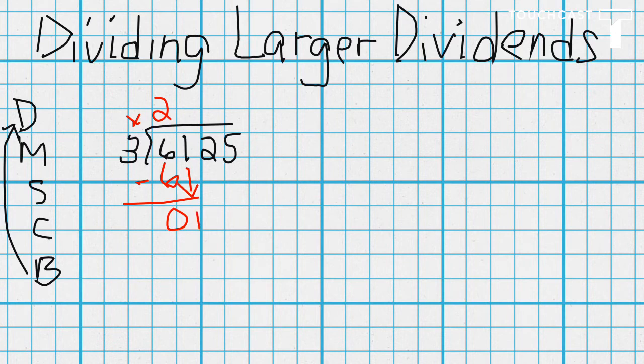Now, last lesson we learned about zeros in the quotient. 3 cannot go into 1, so we're going to put a 0 in the quotient. 0 times 3 is 0. We then subtract. We compare, 1 is less than 3, so we bring down.